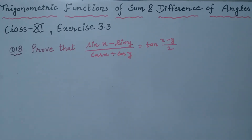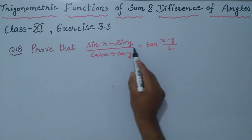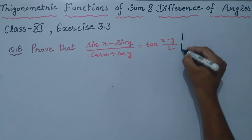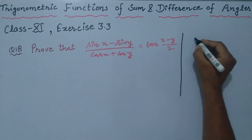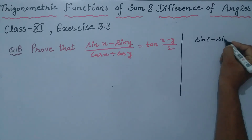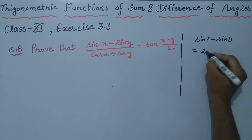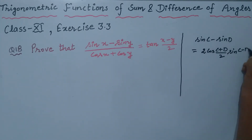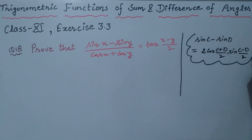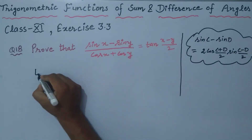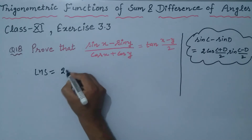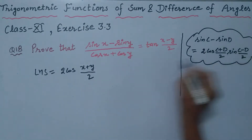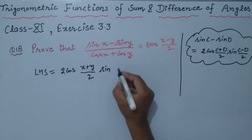Question number 18: prove that sin x minus sin y, whole divided by cos x plus cos y, is equal to tangent of (x-y)/2. For the numerator, sin C minus sin D equals 2 cos (C+D)/2 into sin (C-D)/2. Applying this: numerator becomes 2 cos (x+y)/2 into sin (x-y)/2.